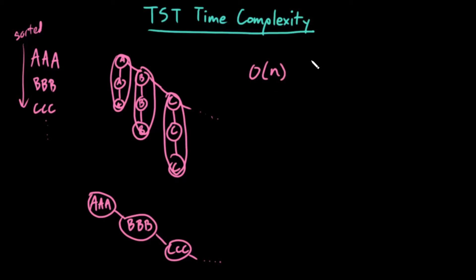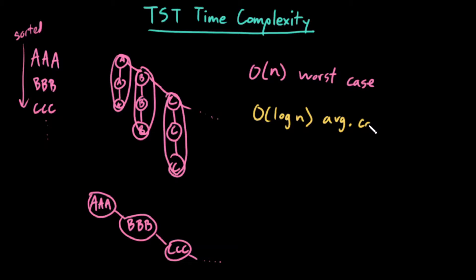So this is just big O of n in the worst case. And also, just like a binary search tree, if my words were randomly shuffled, on average I would expect big O of log n in the average case. So if my words are sorted, that's the worst case — it basically becomes exactly the binary search tree with sorted words — versus on average I expect big O of log n for similar reasons as I would expect in a binary search tree.